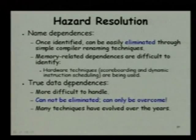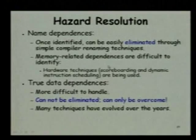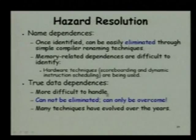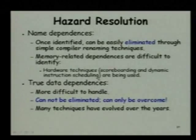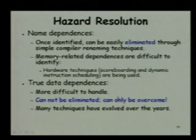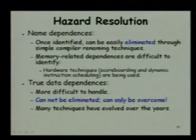The true data dependencies are more difficult to handle than the name dependencies. We cannot really eliminate a true data dependency by any compiler techniques — we can only overcome it, reducing the effect. We will see how we can require that pipeline stalls be minimal, and we will see how we can really overcome the difficulties caused by true data dependencies, though we cannot really eliminate them.